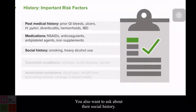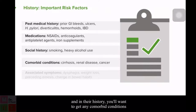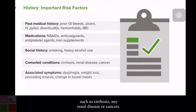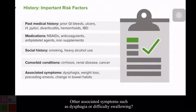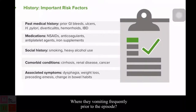You also want to ask about their social history — are they a smoker or do they use heavy alcohol? In their history, you'll want to identify comorbid conditions such as cirrhosis, renal disease, or cancers. Other associated symptoms include dysphagia or difficulty swallowing, any unintentional weight loss, whether they were vomiting frequently prior to the episode, and any other changes in their bowel habits.